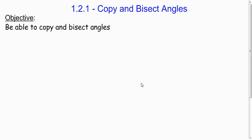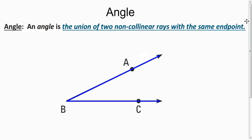Hello class, today we're going to learn how to copy and bisect angles. So what is an angle? Here's the actual textbook definition: when you put two rays together at the same endpoint that don't form a line.